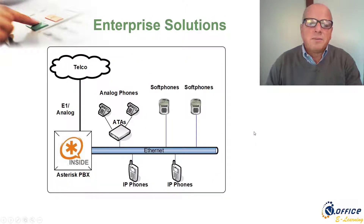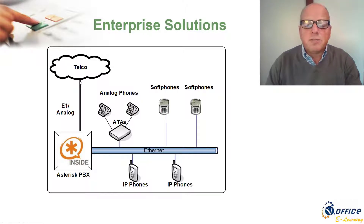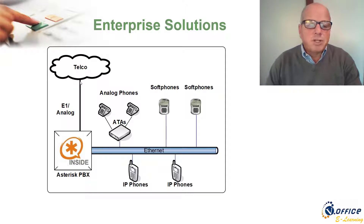For enterprise solutions, Asterisk is used in many companies as a PBX. Usually you have Asterisk connected to the telephone company using an E1 or T1 card, or an analog card. Many companies are now, instead of using E1 or analog, using SIP trunks that are cheaper and simpler — you don't need any specialized hardware.